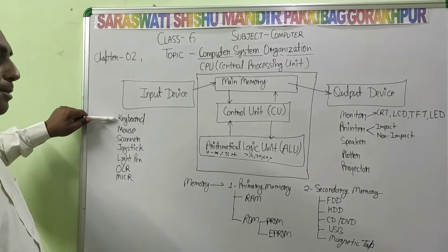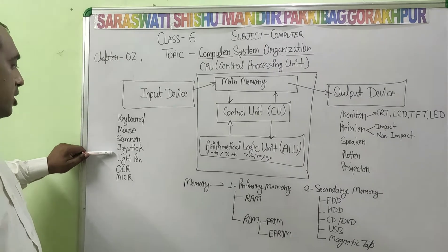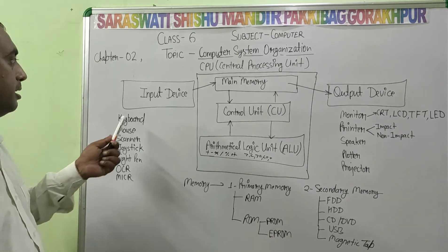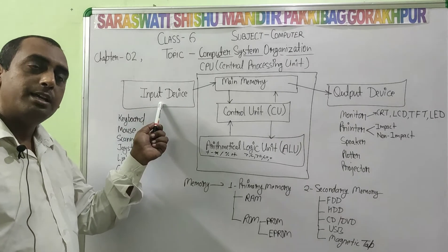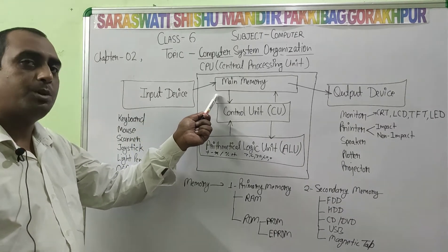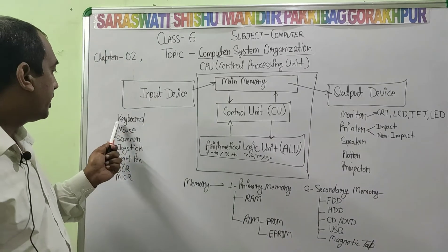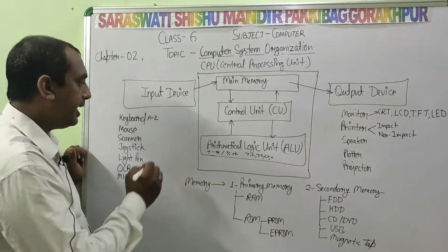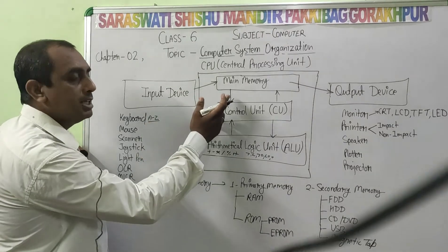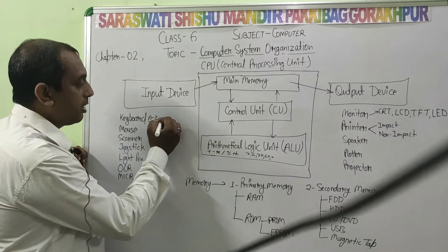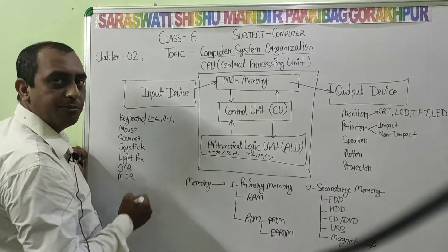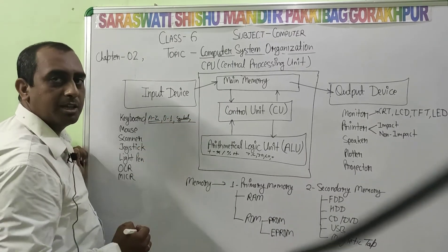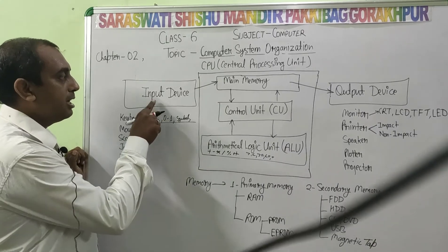Examples of input devices are: keyboard, mouse, scanner, joystick, light pen, OCR, MICR, microphone, camera, etc. These are input devices which we use to send data to the computer. From the keyboard we can feed A to Z alphabets, any number, any symbol or data into the computer. So keyboard is an input device.